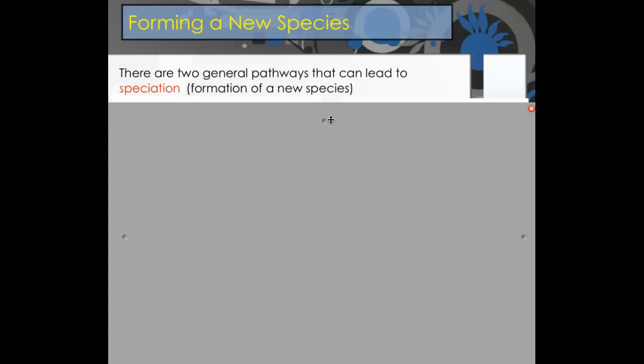The first one is gradualism and the second one is punctuated equilibrium. But first, a species is a group of organisms that can reproduce together. Their reproductive structures fit together and when they form offspring, those offspring are viable, meaning they are fertile and can actually have babies.